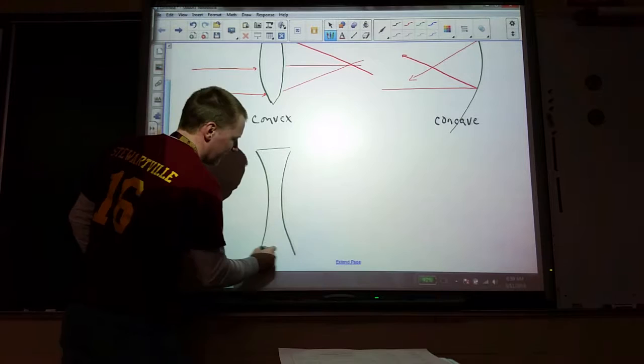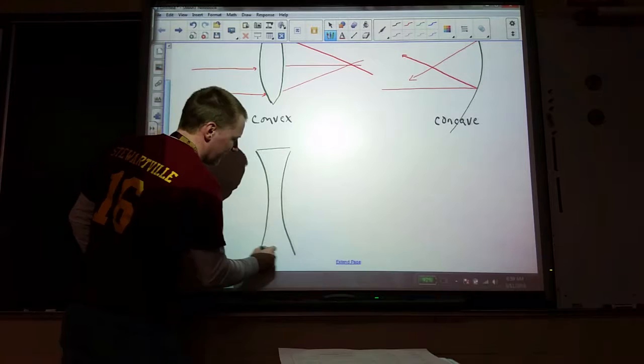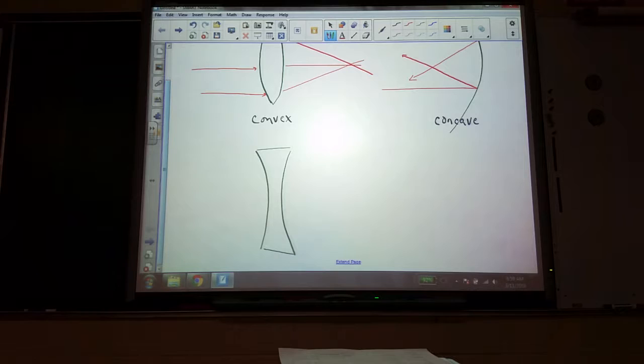What about a concave lens? What does that do to rays? And what do the images look like?